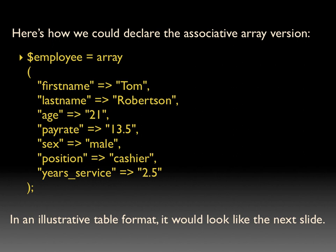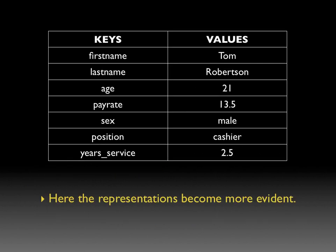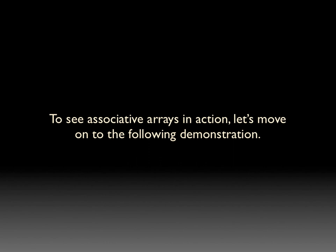To look at the table format, let's look at the next slide where you can see it more clearly. The keys are listed on the left, the values are on the right. So first name is to Tom, as last name is to Robertson, as age is to 21, and so on. Here the representations become far more evident than they were in the plain simple indexed array. So to see associative arrays in action, let's move on to the following demonstration.